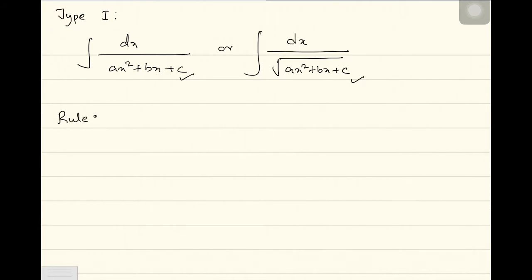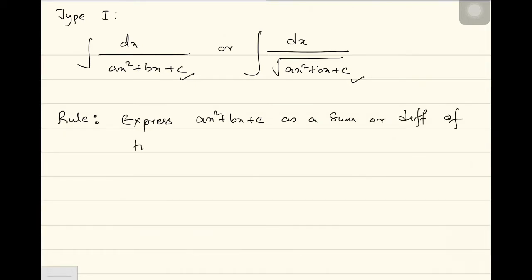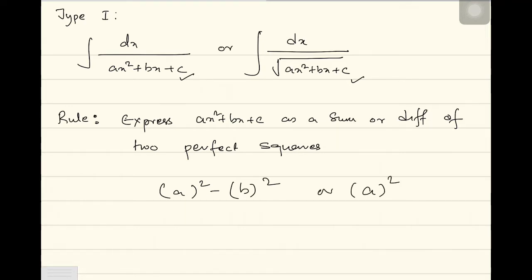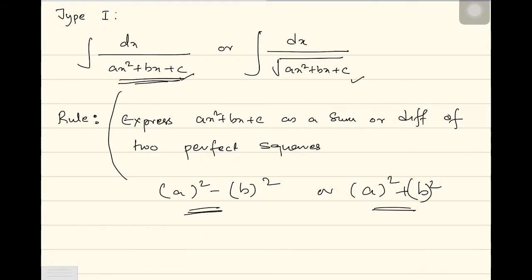Let me explain what is meant by sum or difference of two perfect squares. Either you can make it as a squared minus b squared — the difference of perfect squares — or you can make it as a squared plus b squared — the sum of perfect squares. You need to convert this quadratic into perfect squares as a sum or difference, where a and b would be some expressions. Once I do an example, you will understand it better how to express any term as sum or difference of perfect squares.